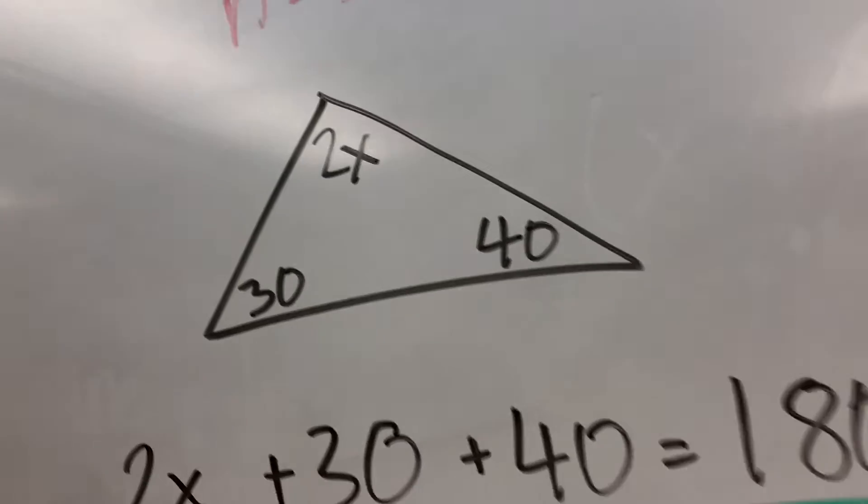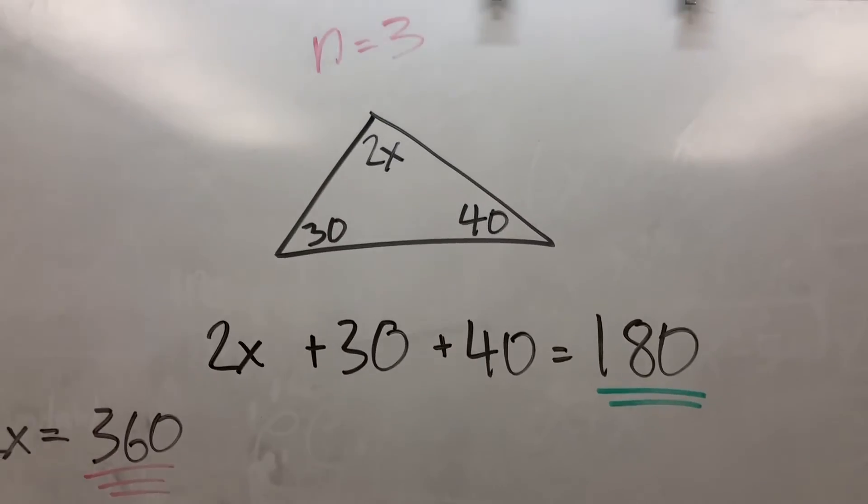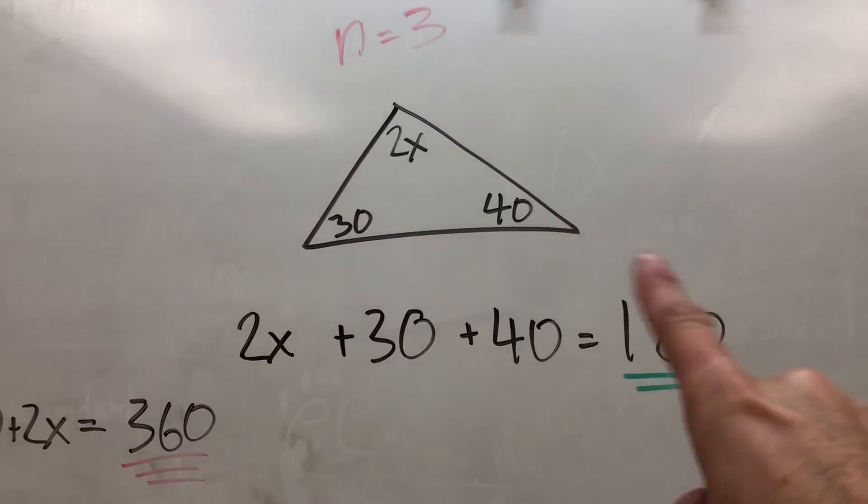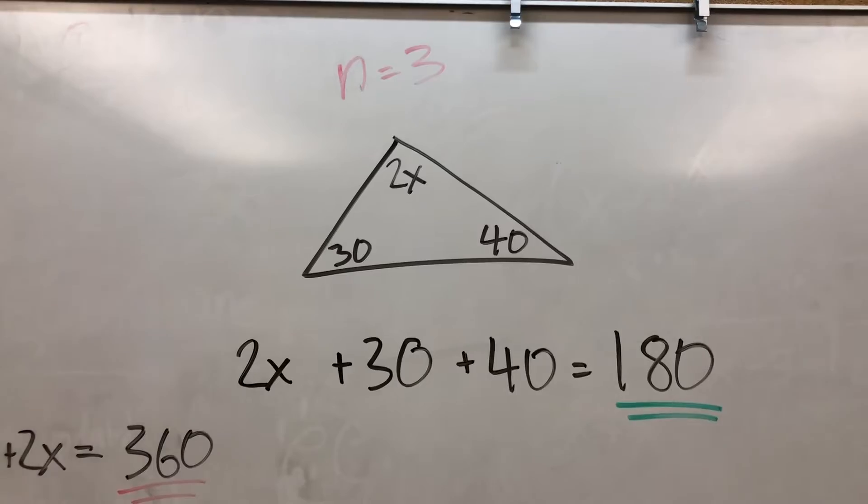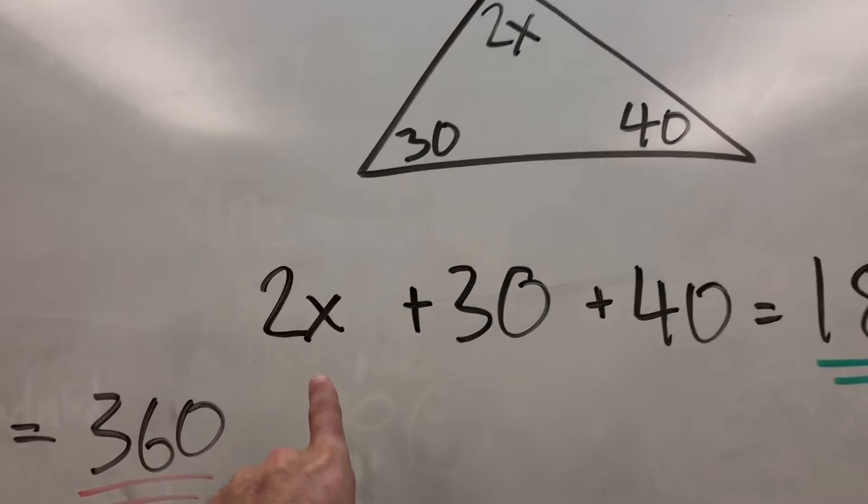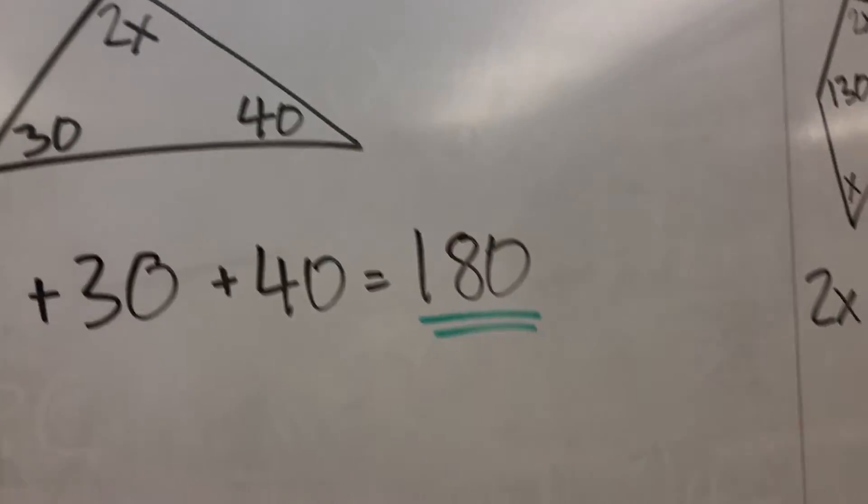So let's start with the triangle. This is something you just have to remember. Commit it to your brain, but the interior angle sum of a triangle is always 180. That's a magical number. So if I was trying to solve for x in this case, I'd set up an equation. Angle plus angle plus angle equals 180.